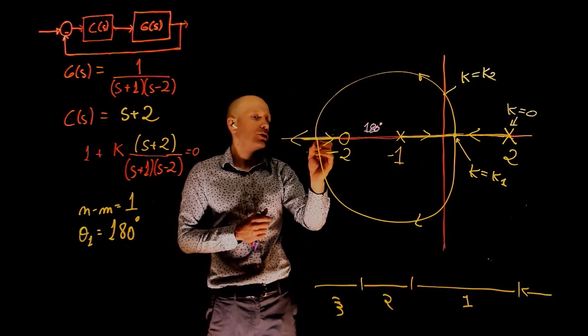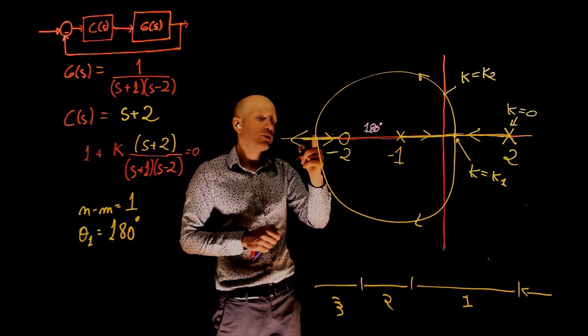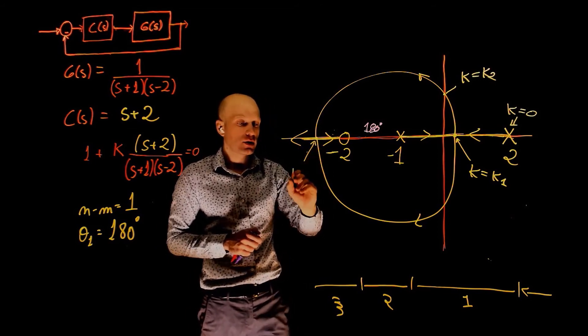And let's assume here that when the poles become critically damped or the same, let's call this value K3.